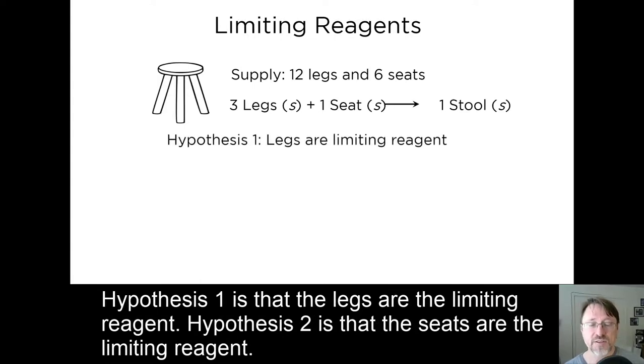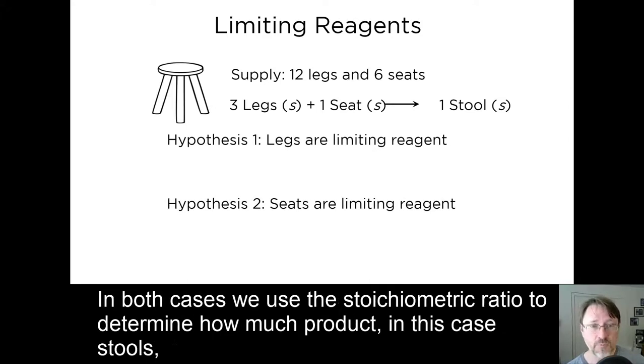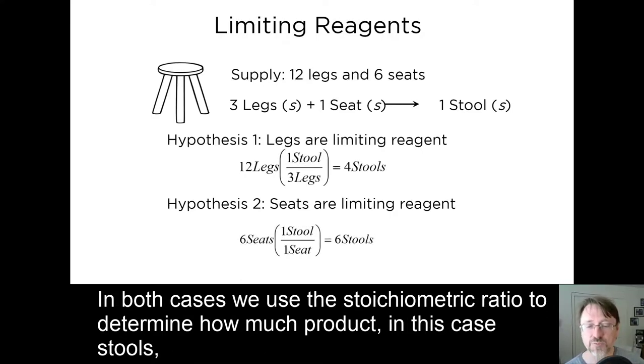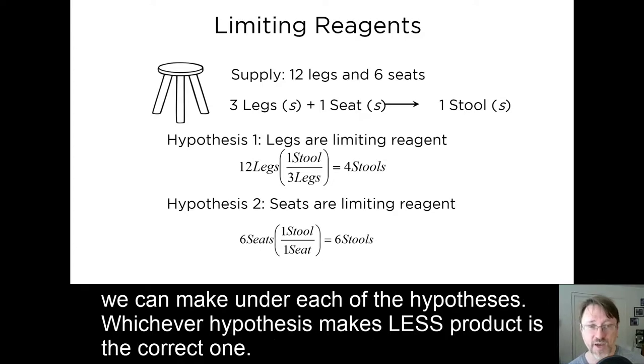Then we examine two hypotheses. Hypothesis 1 is that the legs are the limiting reagent. Hypothesis 2 is that the seats are the limiting reagent. In both cases, we use the stoichiometric ratio to determine how much product, in this case stools, we can make under each of the hypotheses. Whichever hypothesis makes less product is the correct one.